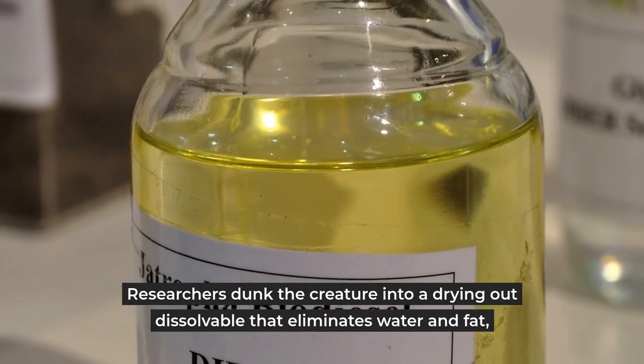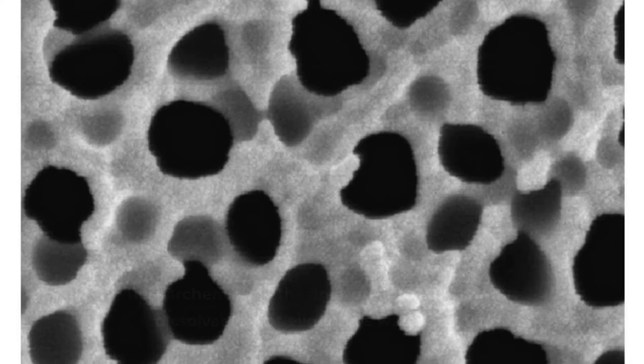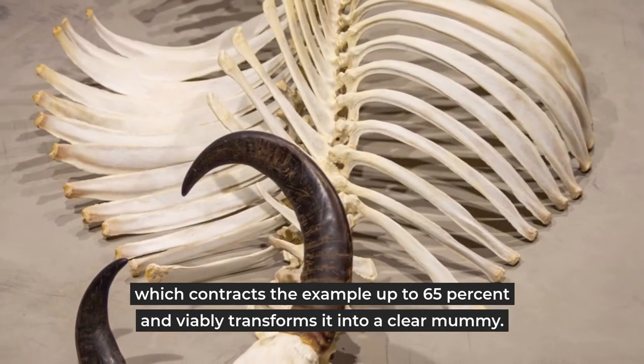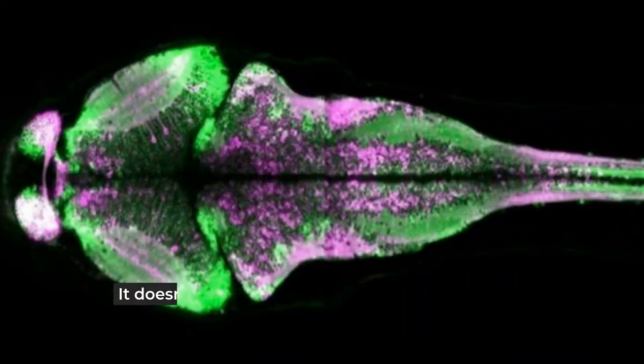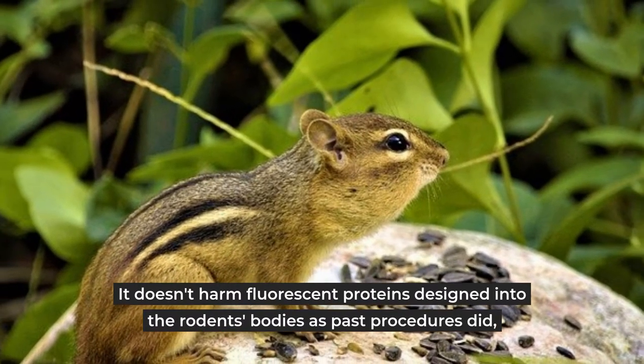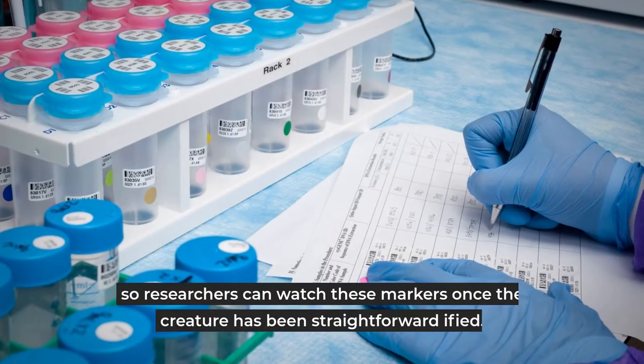This shrinks the specimen up to 65% and effectively transforms it into a clear mummy. It doesn't damage fluorescent proteins engineered into the rats' bodies as past procedures did.